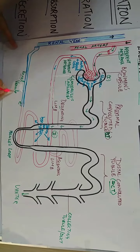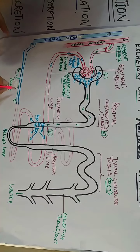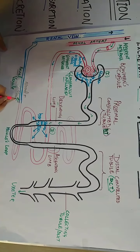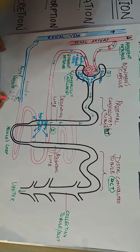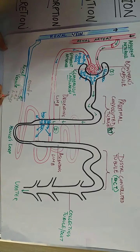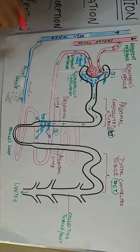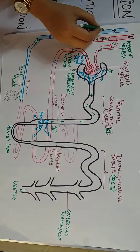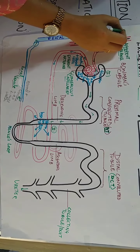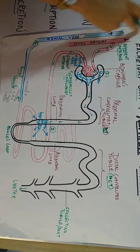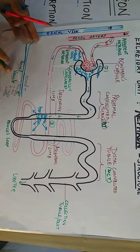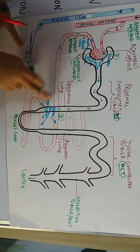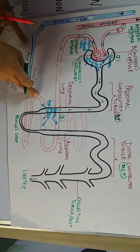These selectively reabsorbed substances — glucose, amino acids, and a huge amount of water — enter the renal venule, which is the extended part of the efferent arteriole surrounding the tubular region. From the renal venule they enter the renal vein, which transports them back to the vena cava and then to the heart.